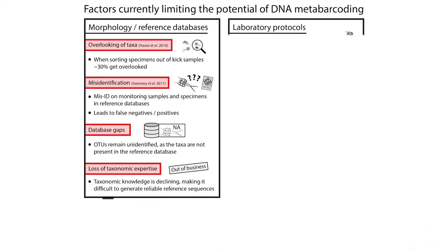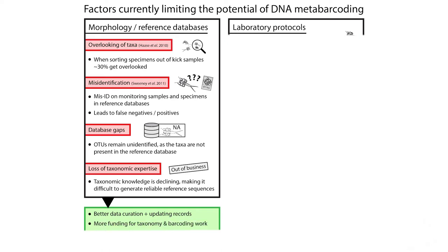Potential solutions include investing more time and funding in database creation, updating records when new taxonomic information becomes available, and securing funding for both taxonomy and barcoding work to keep reference databases alive. Molecular biologists really need to work together with classical taxonomists to confirm potential cryptic species and resolve conflicting taxonomies in reference databases.